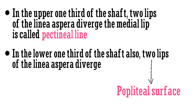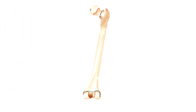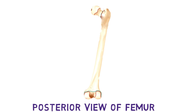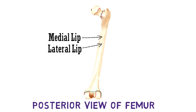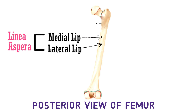It seems confusing, right? Let's have a look at all these parts to understand it better. This is the posterior view of femur. Here the medial lip is present, and here the lateral lip is present. These are visible better when seen on a real bone. Both of these lips comprise the linea aspera.